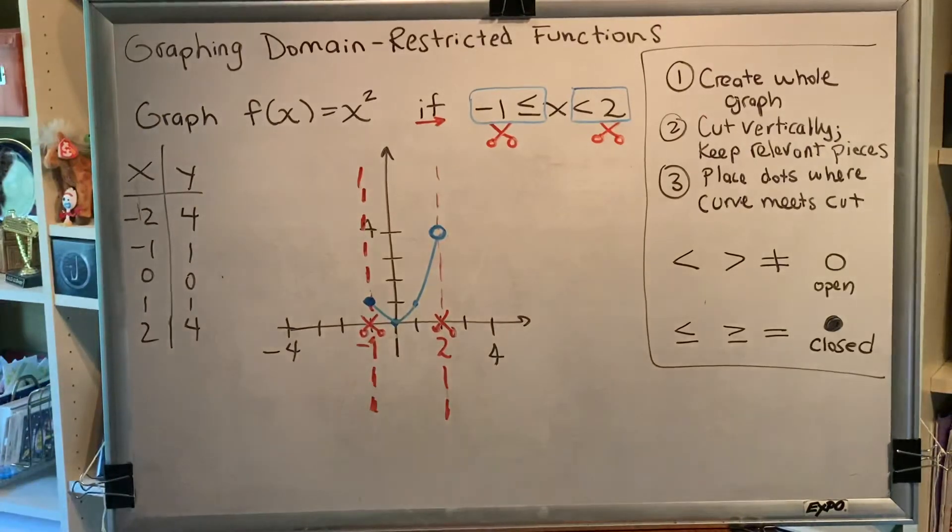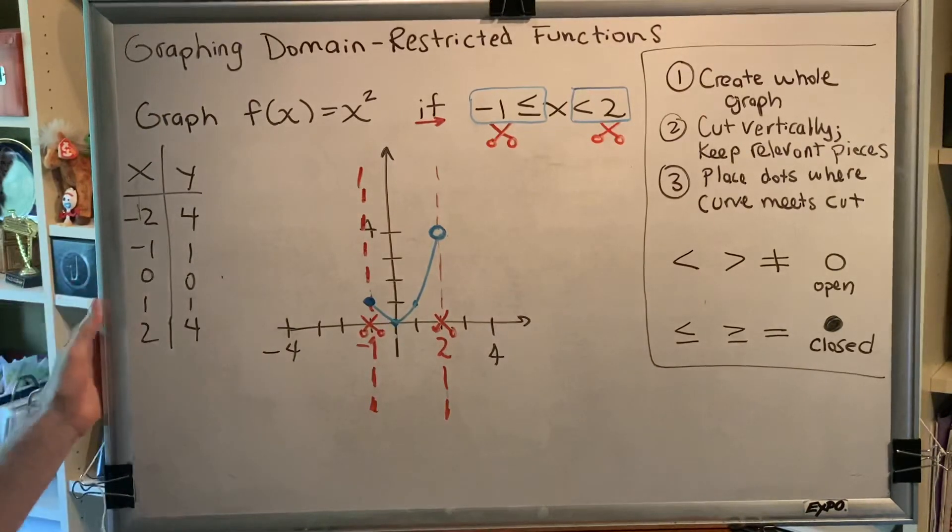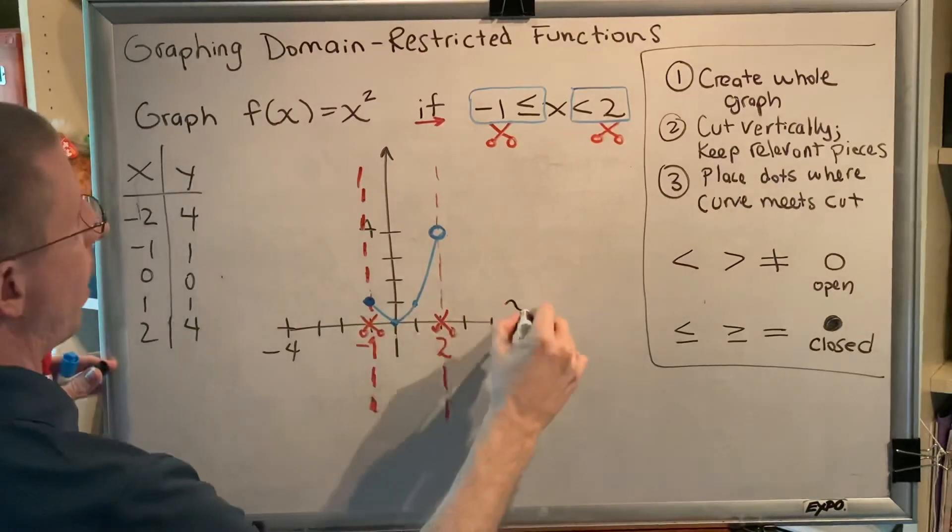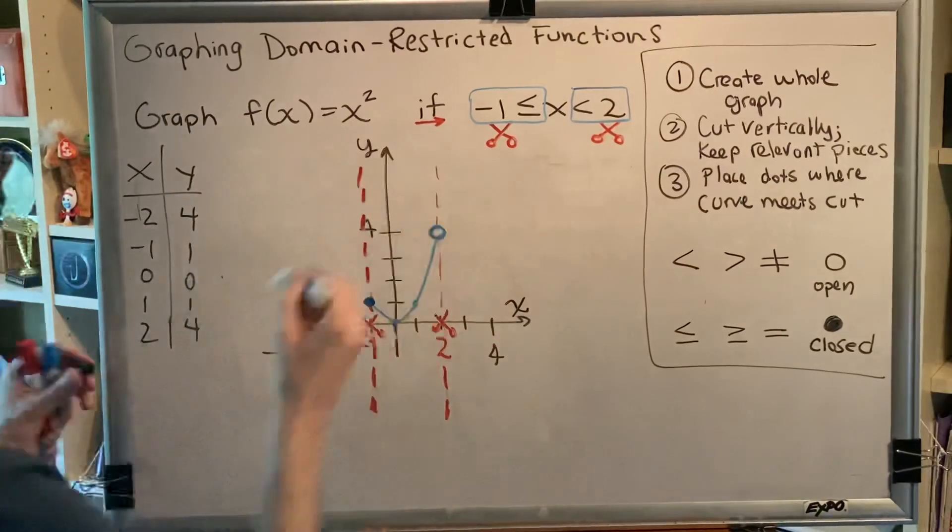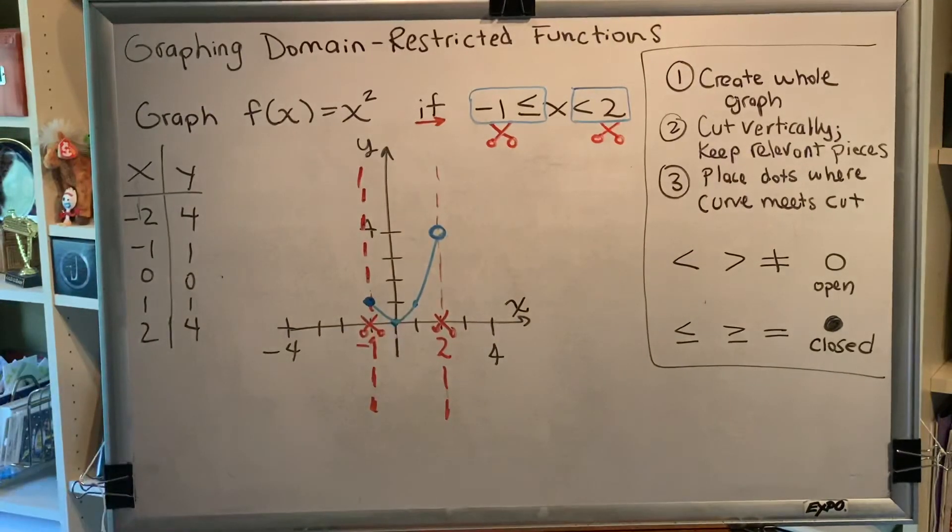Okay. This is the graph of the domain-restricted function f of x equals x squared, as long as negative 1 is less than or equal to x is less than 2.